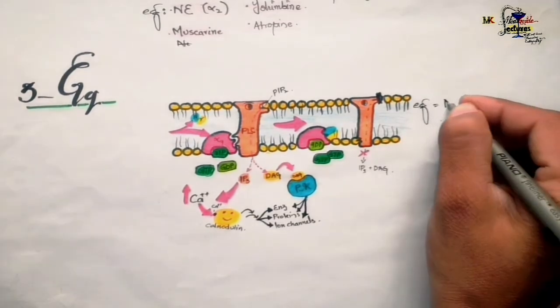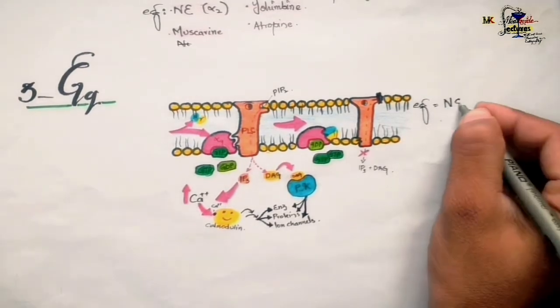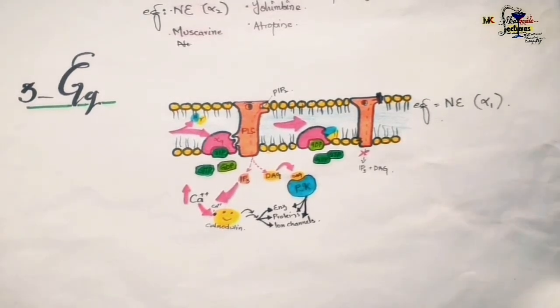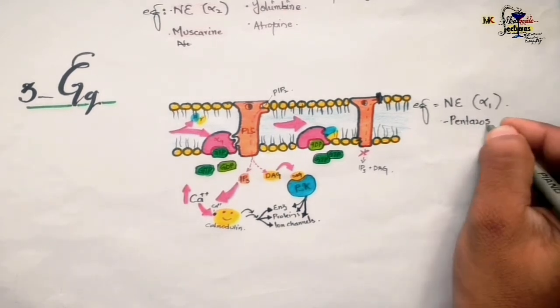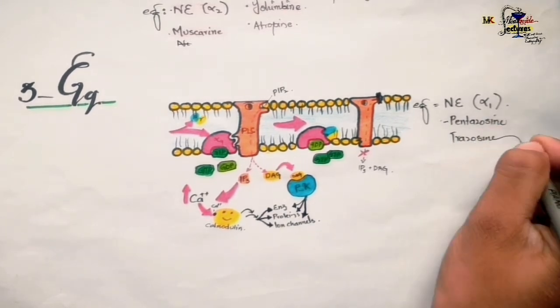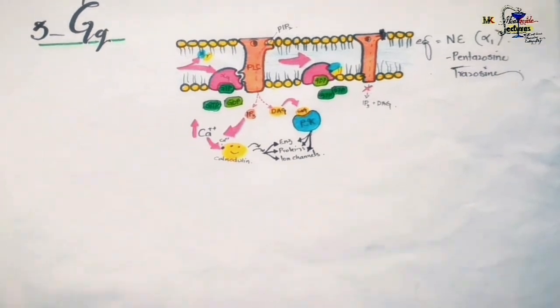Drugs exhibiting this mechanism include norepinephrine acting on alpha-1 receptors, for which prazosin and terazosin act as antagonists. Pertussis toxin inhibits the association of alpha, beta, and gamma subunits of Gs and Gi GPCRs, and cholera toxin acts on alpha subunits to prevent GDP replacement by GTP.